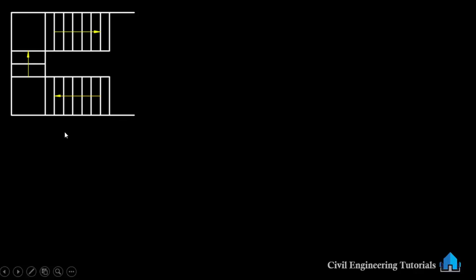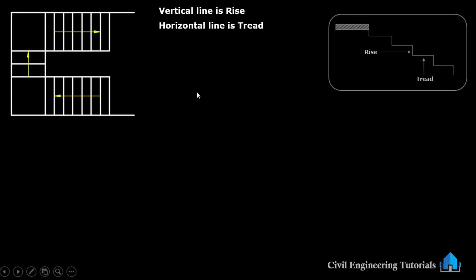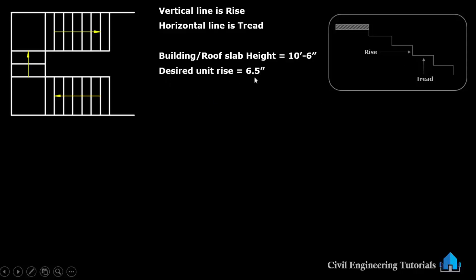This staircase plan I have already provided in my last floor plan video and its link is given in the description box. Here you can see this vertical line is the rise and the horizontal line is the tread. We have given building or roof slab height that is 10 feet 6 inch.